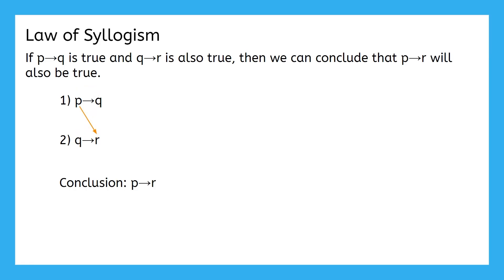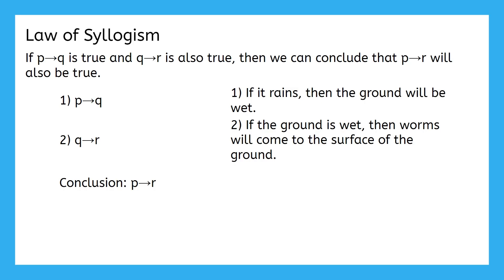Let's put it in action. If it rains, then the ground will be wet. If the ground is wet, then worms will come to the surface of the ground. What conclusion do you think you can make here?